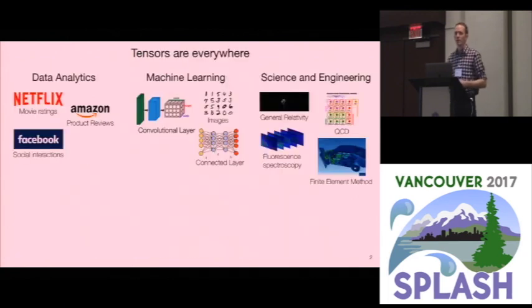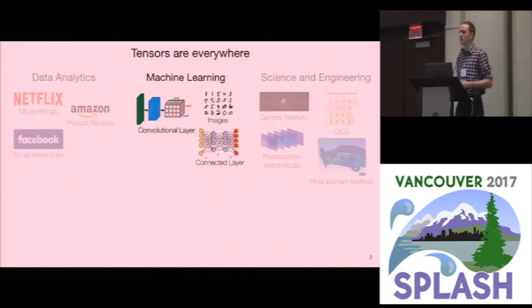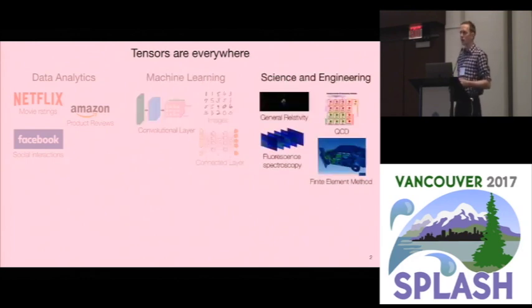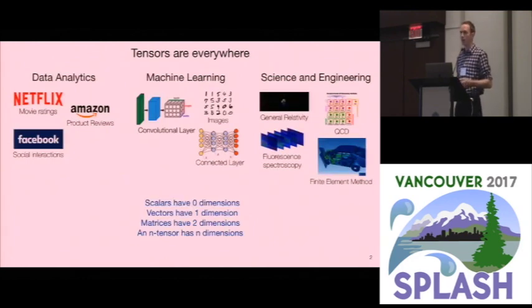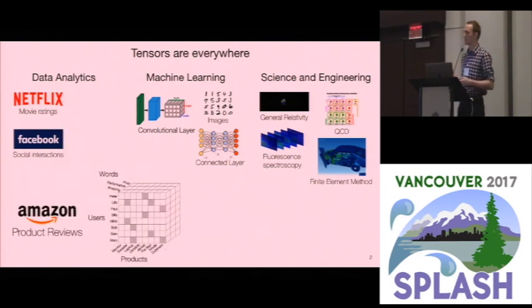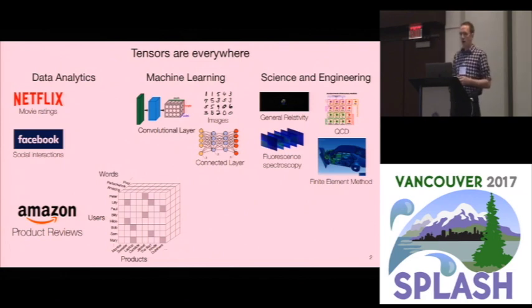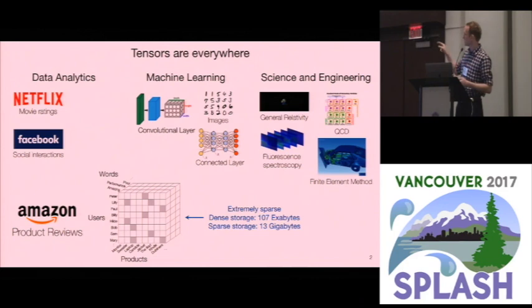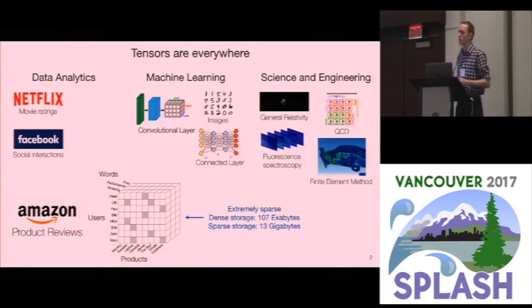Tensors are everywhere these days, from data analytics to machine learning to science and engineering. A tensor is a generalization of a matrix that has two dimensions to any number of dimensions. Consider this Amazon tensor, which consists of people, products, and words that these people use in product reviews. This tensor is extremely sparse — there's no way you can store it as a dense tensor, so you have to compress it into sparse formats. That's where you need sparse tensor algebra.